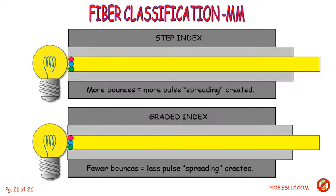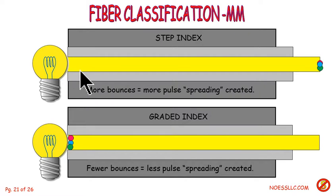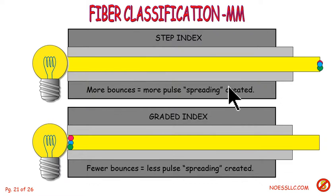I tried to do a little animation to show you the step index and the spreading that occurs. All the beams were launched at the same time, but because the fiber is so big, some came in with a few bounces and some came in with many more bounces — so you end up with spreading. They don't all arrive collectively at the same time.